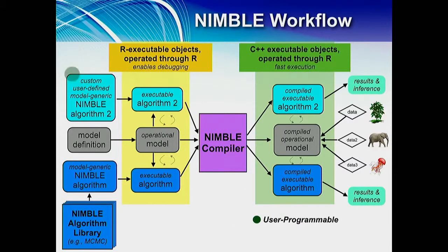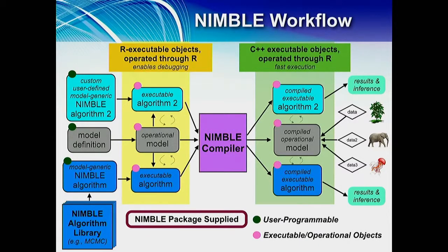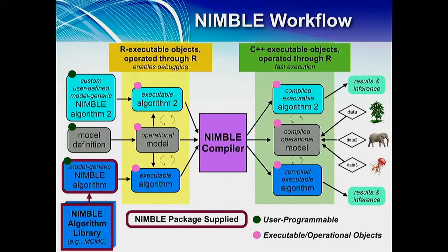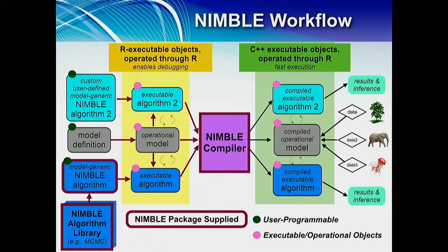Now in this, user programmable objects are the NIMBLE algorithms, written model generic, and the model definition as well, completely flexible. The operational objects are each of these R and C++ operational models and executable algorithms. NIMBLE provides, first of all, the algorithm library, providing the model generic algorithms. Of course, the NIMBLE compiler for compiling C++. And each of these transitions here are links for creating the operational objects.